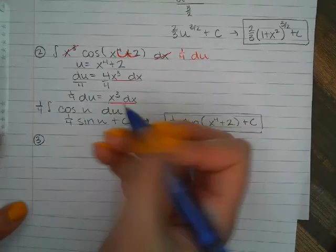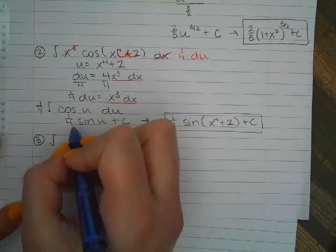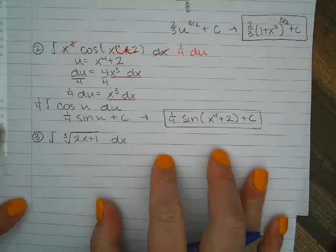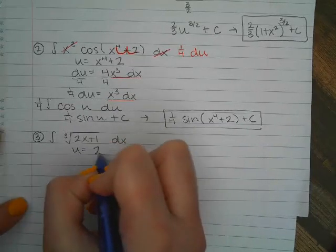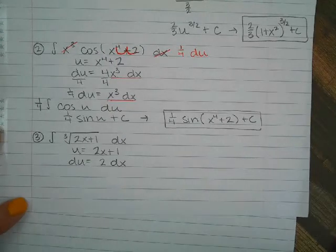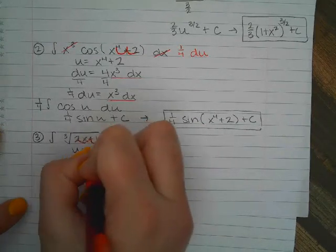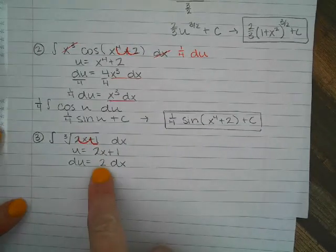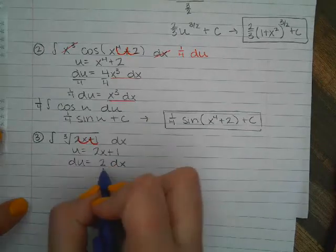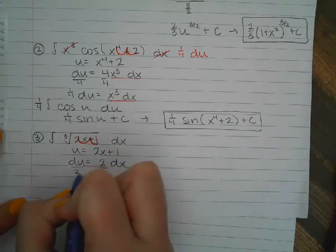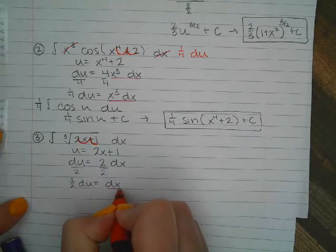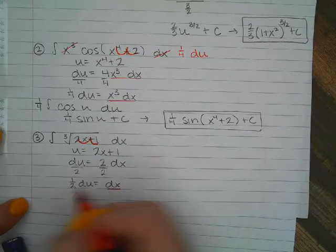Third example: the integral of the cube root of 2x plus 1 dx. U equals the inside: 2x plus 1. The derivative of u is 2 dx. Looking at the problem, I see 2x plus 1 as my u right there. I need to see a 2 dx in the problem — I see a dx but not a 2 — so I divide, giving 1/2 du equals dx. So I sub out the dx for 1/2 du.